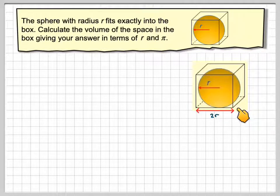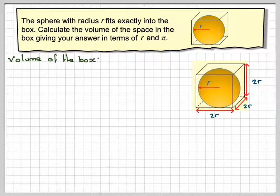And therefore, this will also be 2 times r, and this will be 2 times r. So the volume of the box, what we're going to do is find the volume of the box and take away the volume of the sphere.